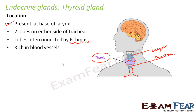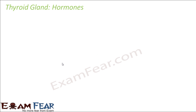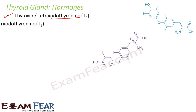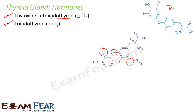The thyroid gland is brownish-red in color and is highly rich with blood vessels. The important hormones released by the thyroid gland are thyroxine, which is chemically called tetraiodothyronine — tetra meaning four — abbreviated as T4 since it contains four iodine atoms. Another hormone released is triiodothyronine, abbreviated as T3, which contains three iodine atoms. So T4 has four iodine atoms and T3 has three.